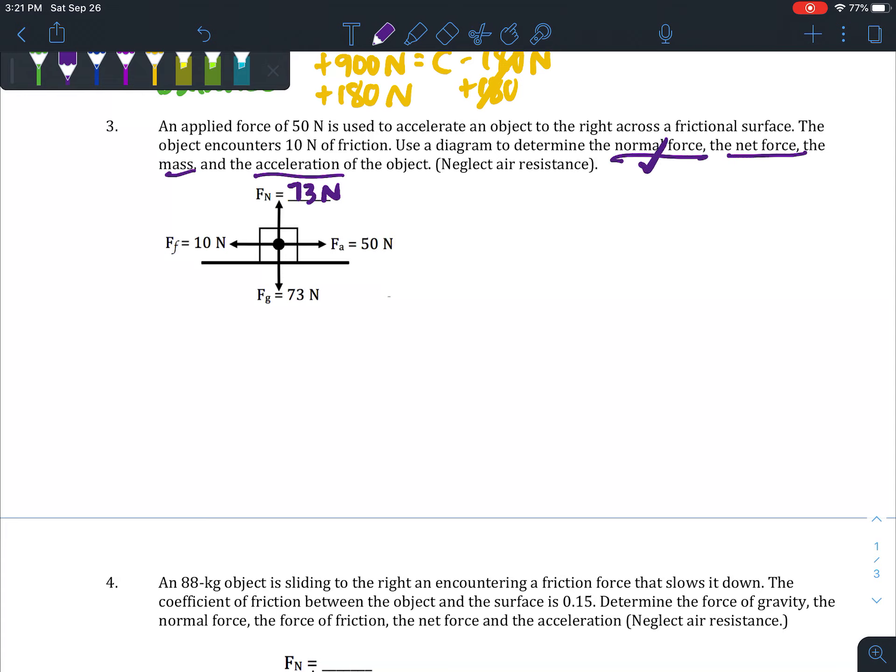Second question is to find the net force. Looking at this, I can see I've got vectors that are not the same horizontally—I have 50 newtons to the right and 10 newtons to the left. I'm going to use that sum formula to solve. I'll write my own equation: since the vectors are in opposite directions and to the right is positive, F_a minus F_f should equal the net force. So F_net = 50 newtons minus 10 newtons, giving me a positive 40 newton net force.